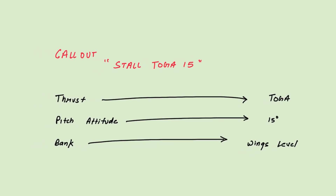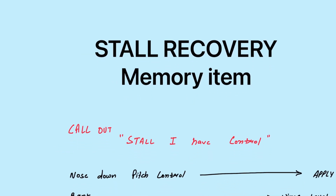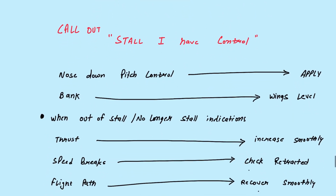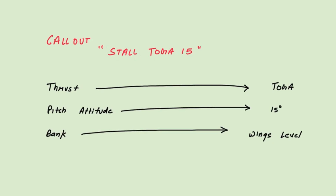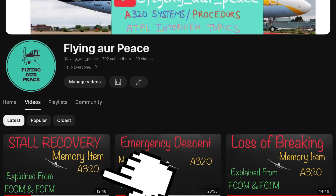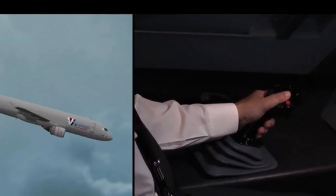Now here's another question: in a standard stall recovery you put the nose down to reduce angle of attack, but here you are using TOGA thrust and 15 degrees pitch. How would you justify that? I only told you in the last video that putting nose down is the best option to reduce angle of attack. Pause and think for a second.